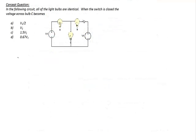Let's apply superposition to solve the following concept question. In the following circuit, all of the light bulbs are identical, so we could model them all as the same resistance. When the switch is closed, I have two identical voltage sources and three identical resistors.